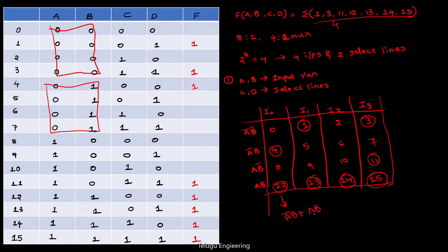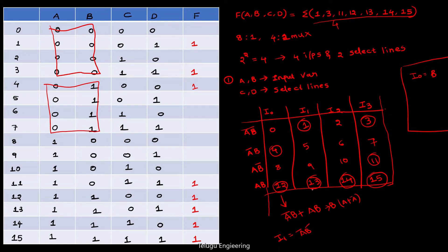What we can do here is take B and A-bar — that will become 1. So i0 is equal to B. Next, similarly, i1...